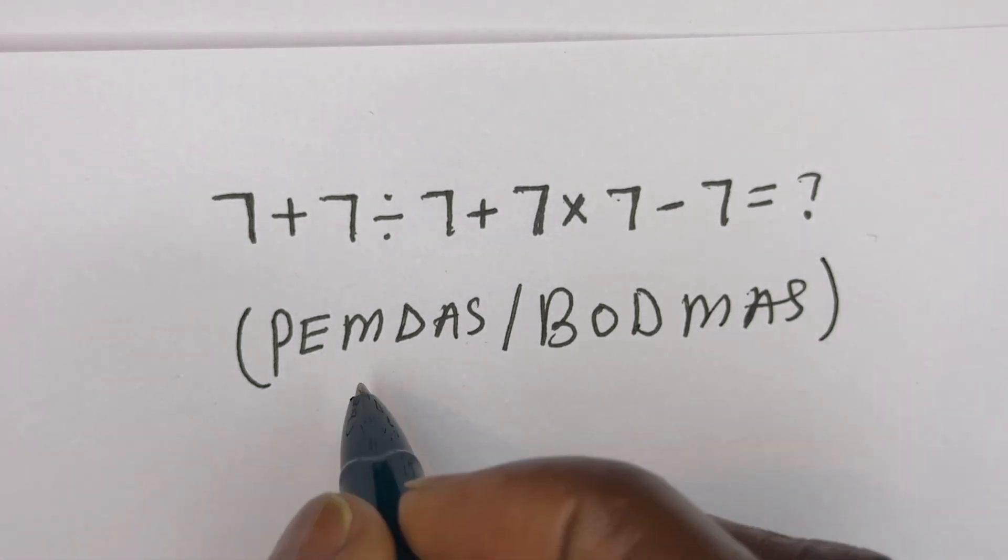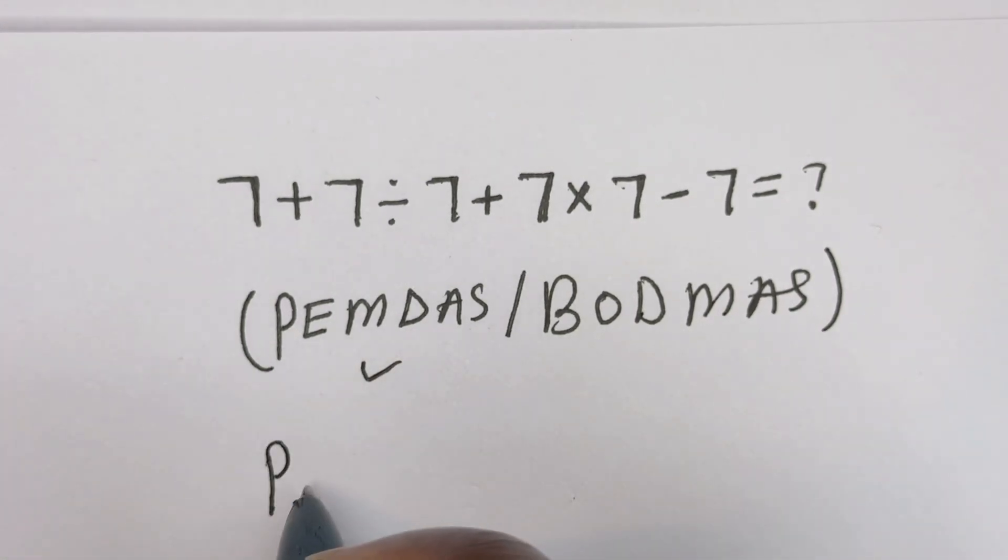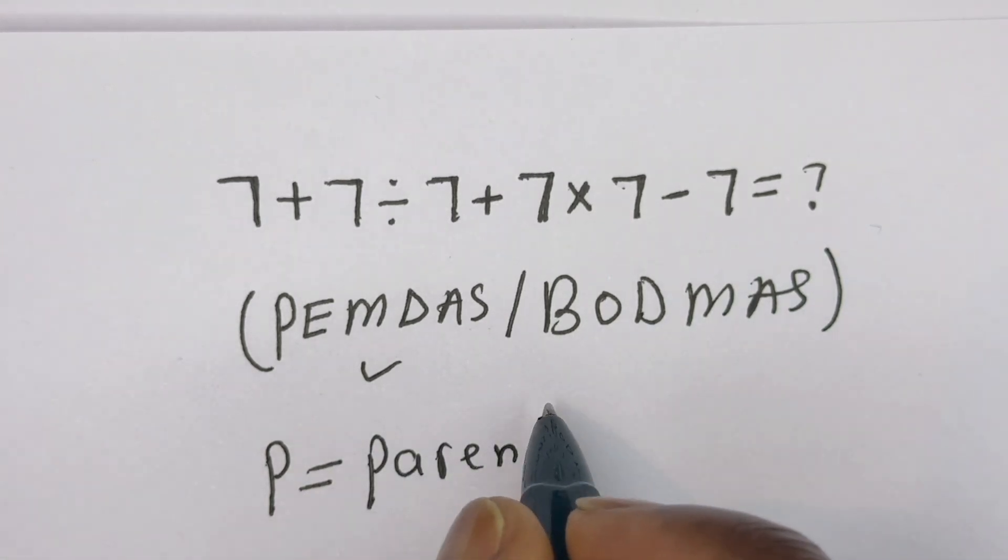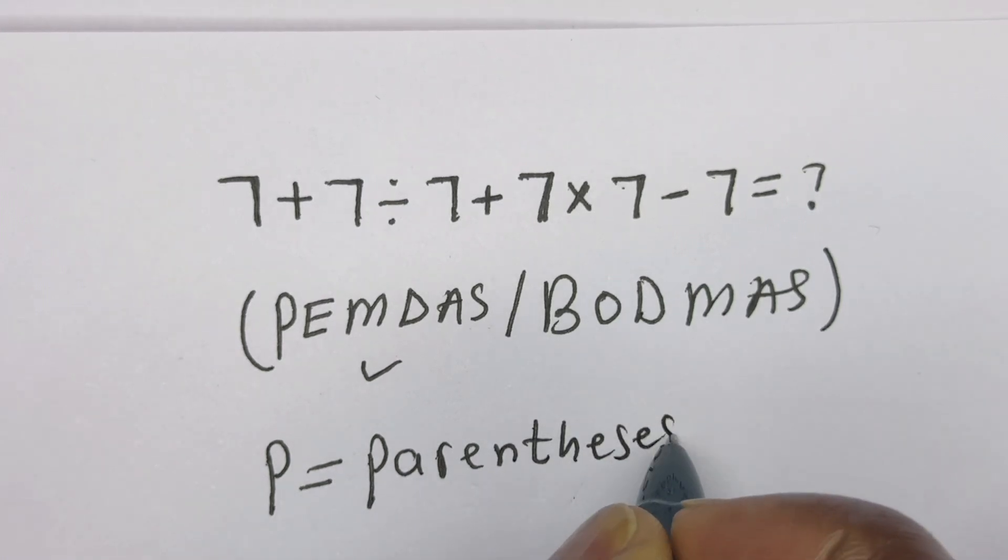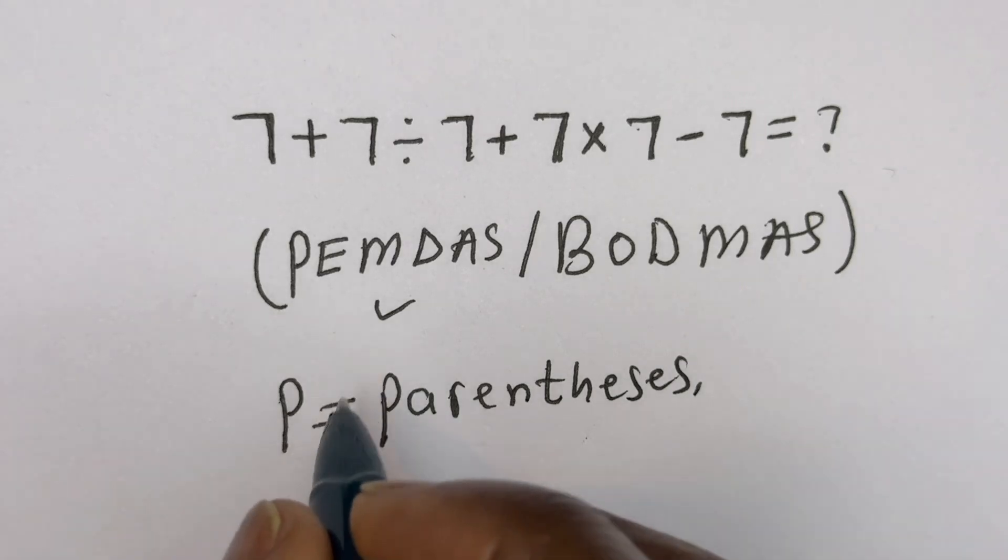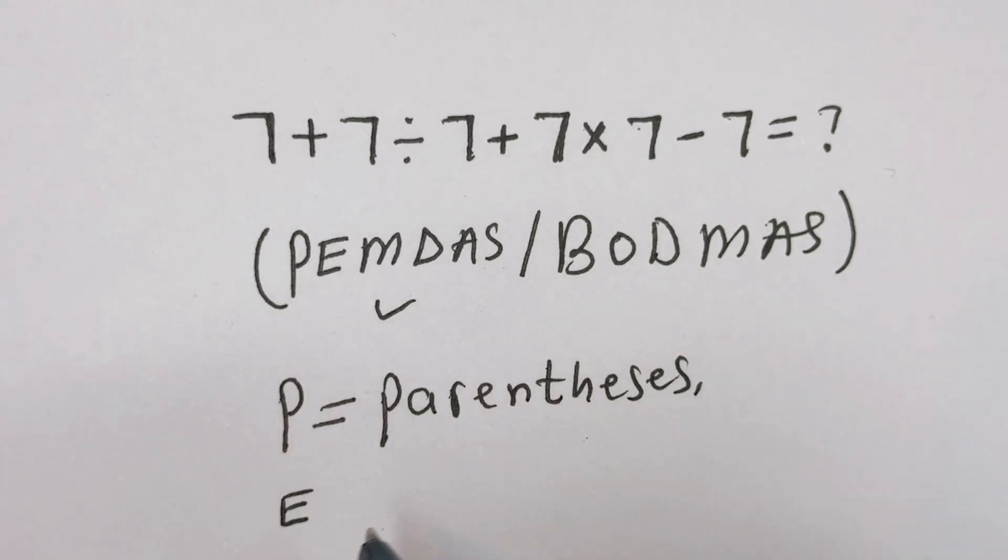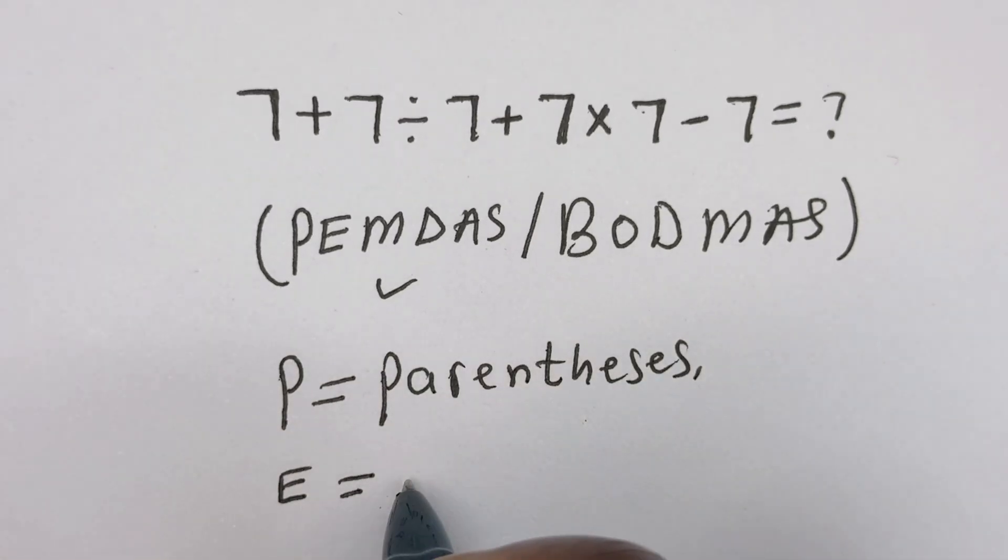Let's see. P is parenthesis. Then E is exponent.